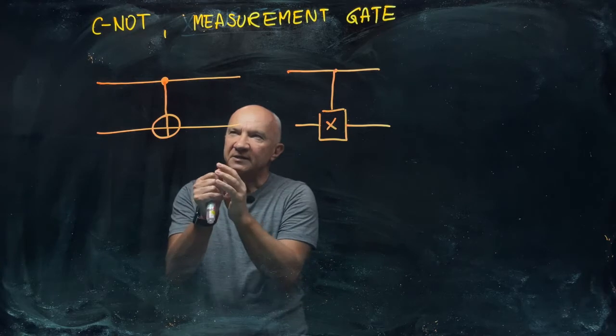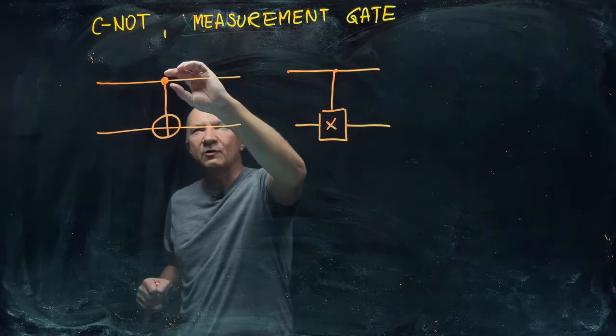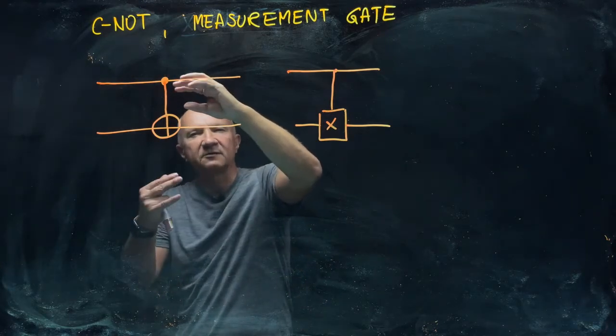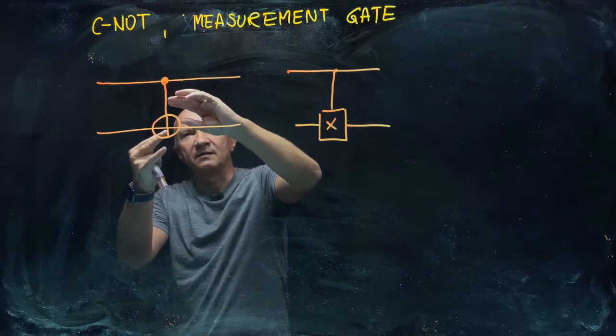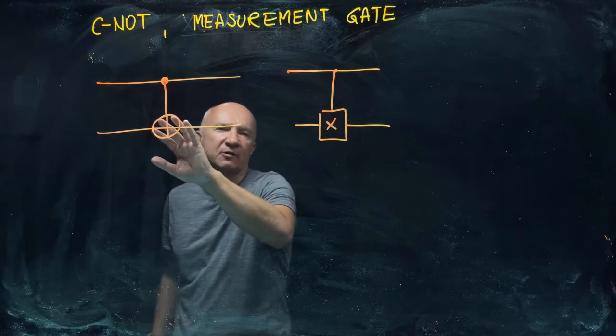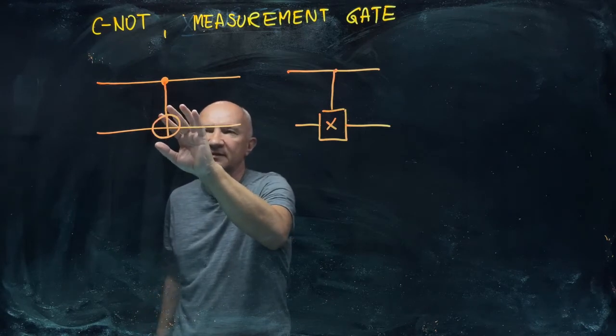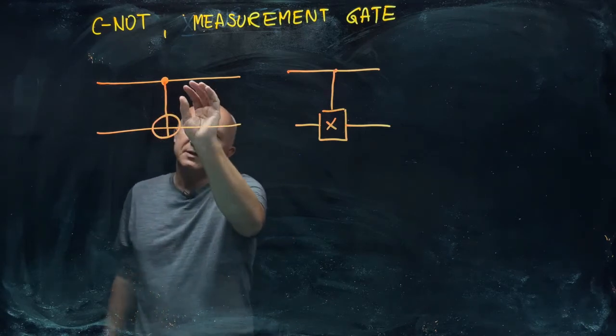What this gate does is depending on the quantum state of the first qubit—that's why it's called control qubit—there will be different unitary operations applied to the second, the target qubit.